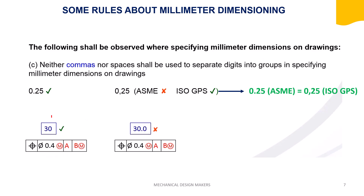When expressing a theoretical exact dimension, there is no decimal point and a leading zero should be included where applicable. This is the correct way; omitting it is the wrong way. As mentioned, we will cover theoretical exact dimension in more detail in a later video.